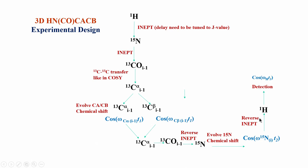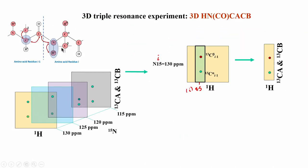The advantage of this class of experiments is that you start from a proton and go back to proton — satisfying the criteria for the most sensitive experiment. Furthermore, if you deuterate the protein, replacing all non-exchangeable protons (H-alpha, H-beta, H-gamma, etc.) with deuterons, you can still do these experiments because the amide proton (an exchangeable proton) remains. When dissolved in water, the amide proton exchanges back to H if water is in excess, so the amide is protonated.